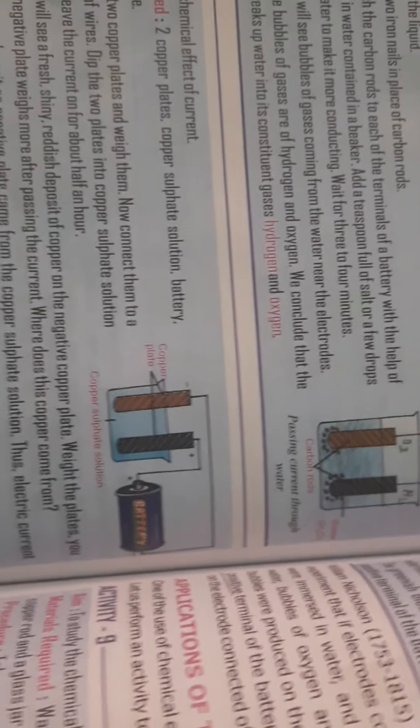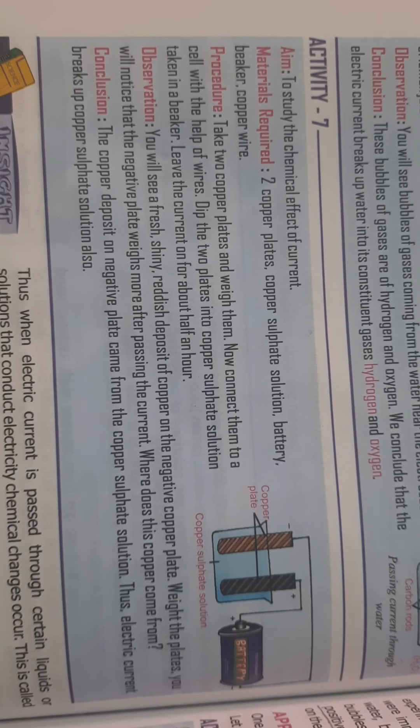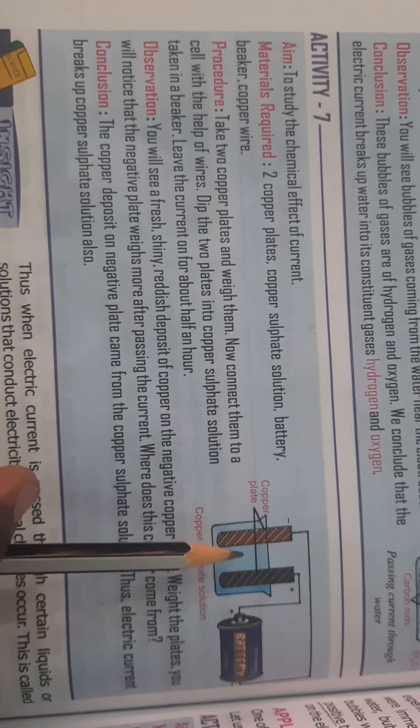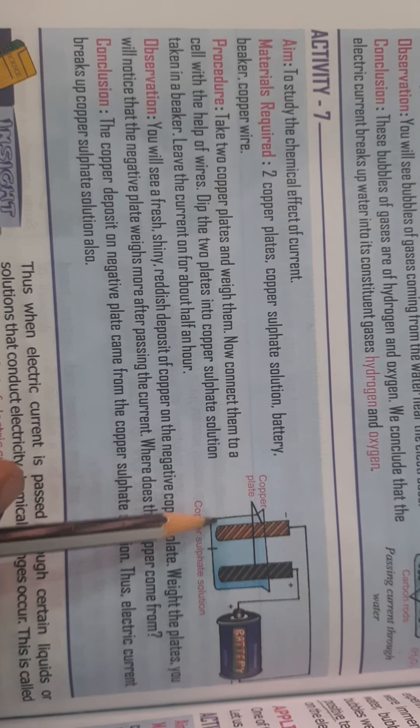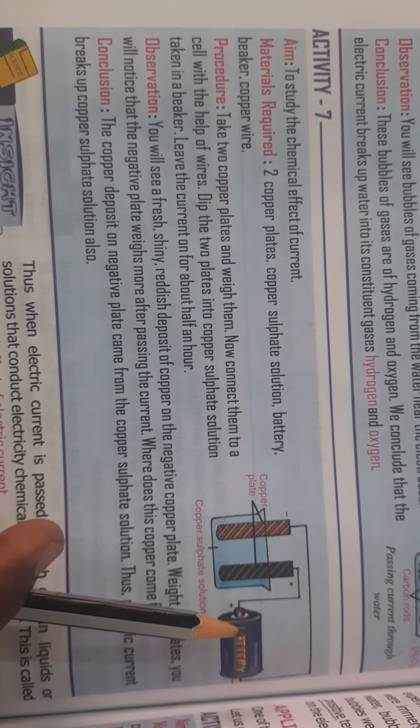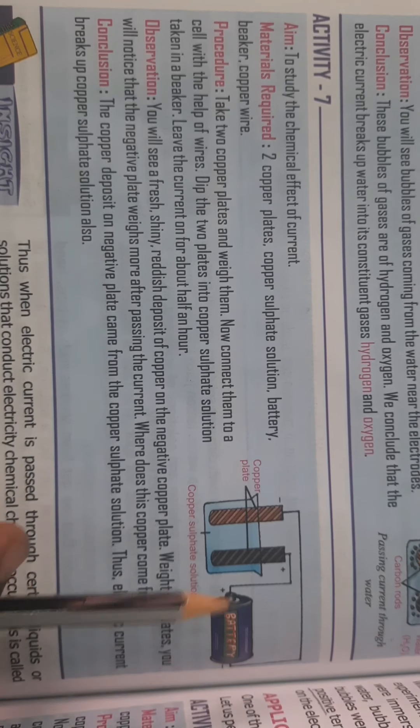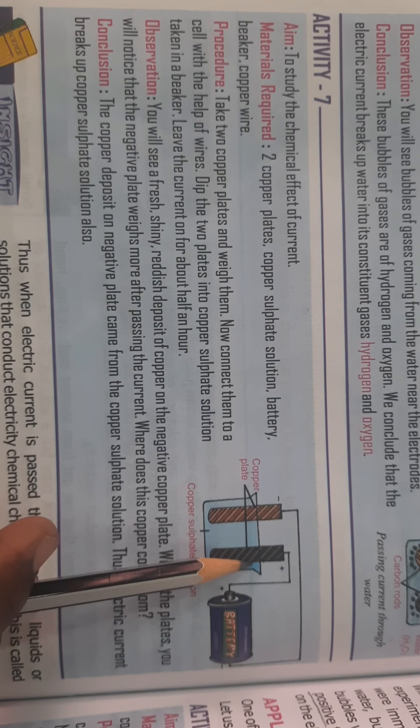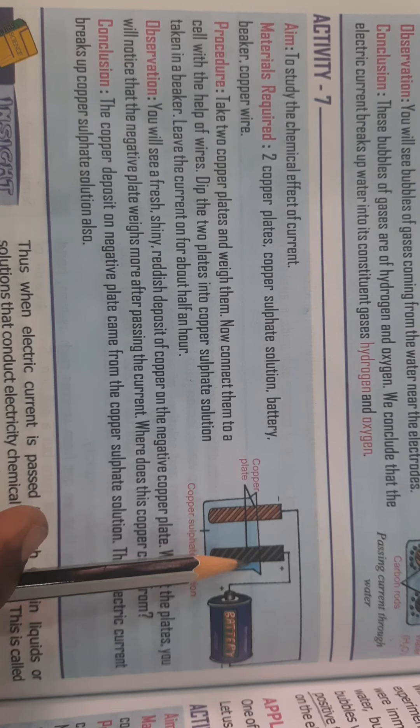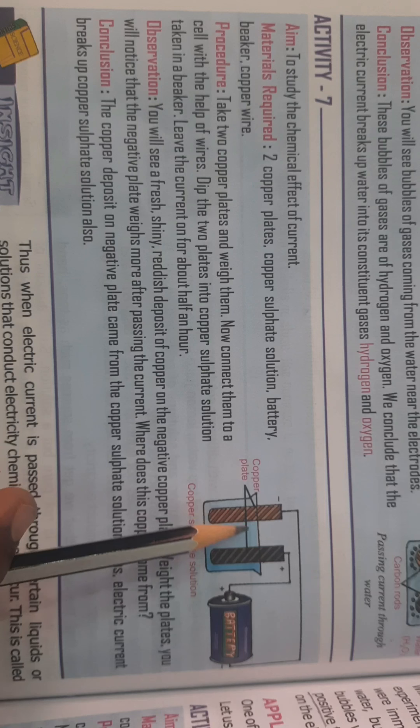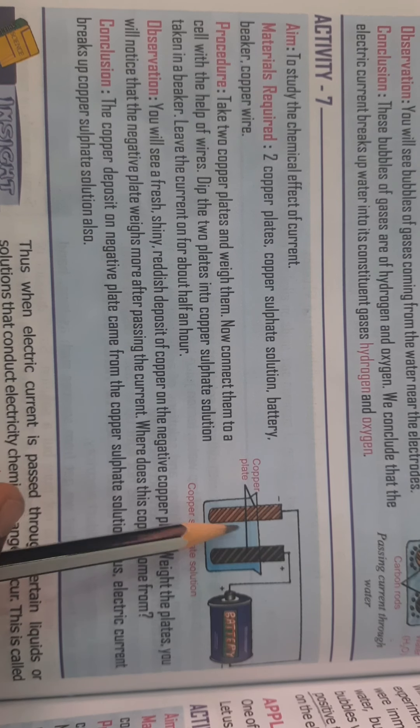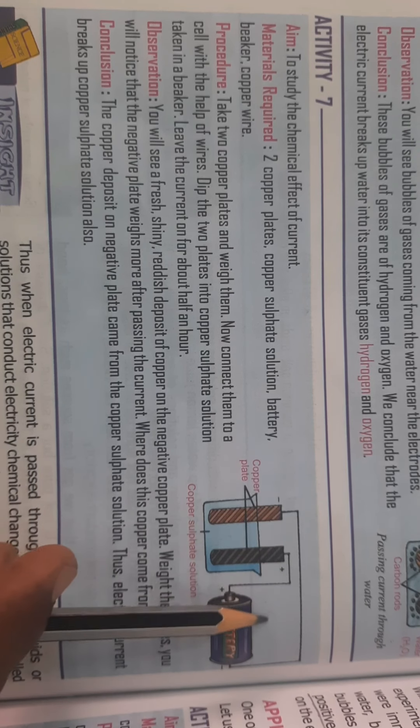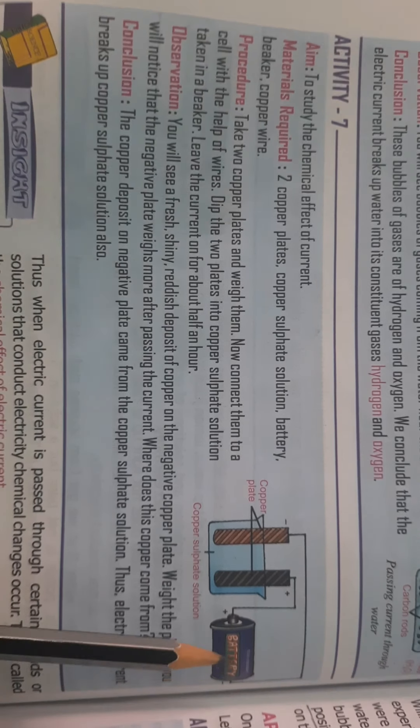Here we have got one more activity to study the chemical effect of current. You have taken two copper plates, a solution of copper sulfate, a battery and copper wire. Before putting the copper plates into the copper sulfate solution, you have to weigh them. After weighing them, dip them in the copper sulfate solution and leave this whole apparatus for half an hour.